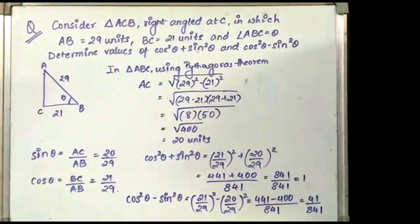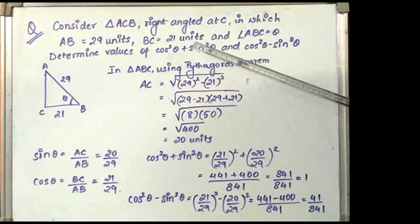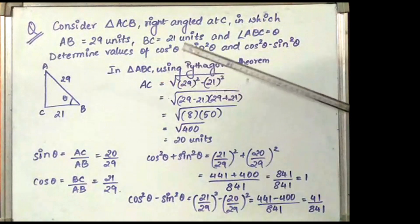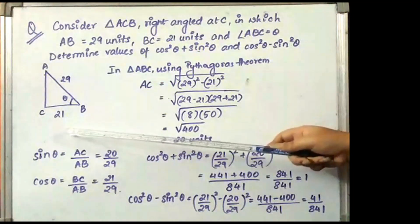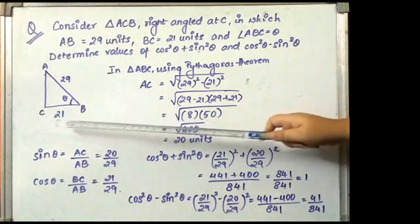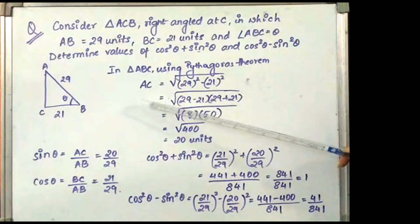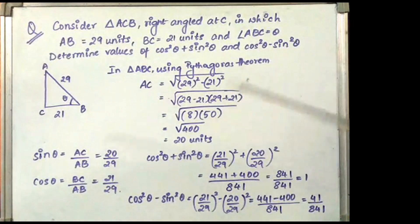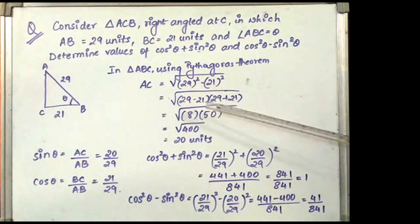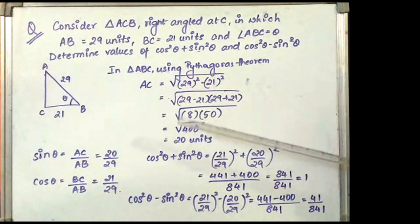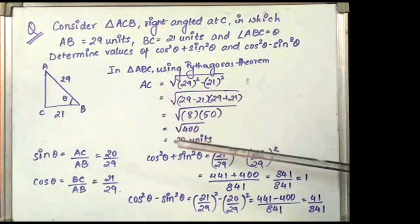The next question: consider triangle ACB right angled at C, in which AB is 29 units, BC is 21 units and angle ABC is theta. Determine the values of cos²θ + sin²θ and cos²θ - sin²θ. In triangle ABC, using Pythagoras theorem, AC = √(29² - 21²). Using the formula A² - B² = (A - B)(A + B), this becomes √(29 - 21)(29 + 21) = √(8 × 50) = √400. Taking length, we ignore the negative root, so AC is 20 units.